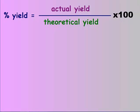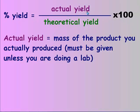Percent yield tells you how close your yield is to how much you should have gotten. The actual yield is how much you actually produce in lab, so it's the mass of product you actually produced. You have to be given this unless you're doing a lab, and if you're doing a lab then whatever you weigh as your final product would be your actual yield.